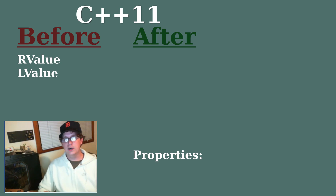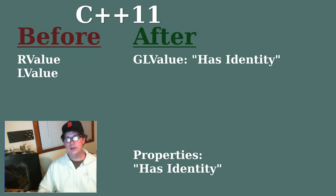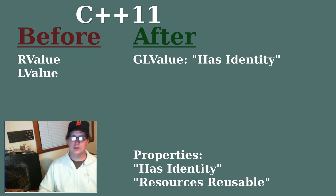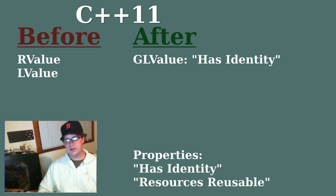One is whether or not the value has an identity. These are GL values. The second property is whether or not the value's resources can be reused. That is to say whether or not we can move from it, leaving it in some indeterminate but valid state. For these values we have the term R value.